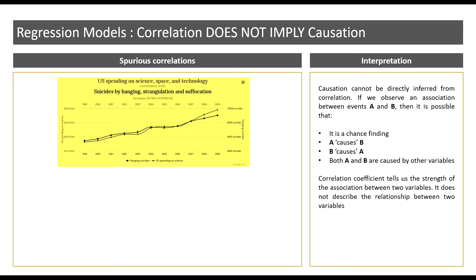Here in this graph on the left, we can see that there is a strong correlation between US spending on science and technology versus suicides by hanging. This is likely to be spurious in nature or it can be deemed as a chance finding, as it is very unlikely that the US government is waiting for a person to commit suicide before allocating the budget for science and technology.